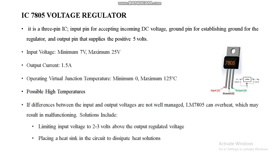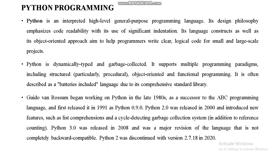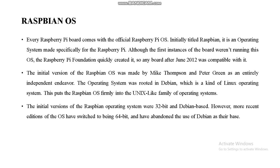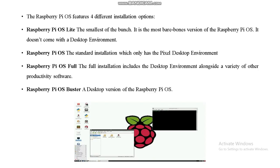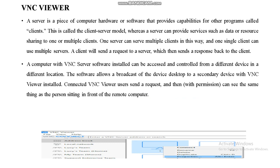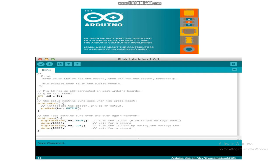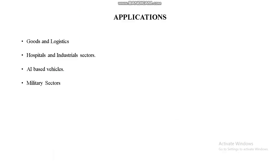The IC7805 voltage regulator provides a stable 5V output, and the IC7812 voltage regulator provides a stable 12V output as part of the power supply unit. Python programming is developed on Raspbian OS, which is Linux-based. PuTTY is used to connect the Raspberry Pi to a laptop, and VNC Viewer is used for remote connections. Arduino IDE is used to develop the embedded program for Arduino, through which motors are controlled.